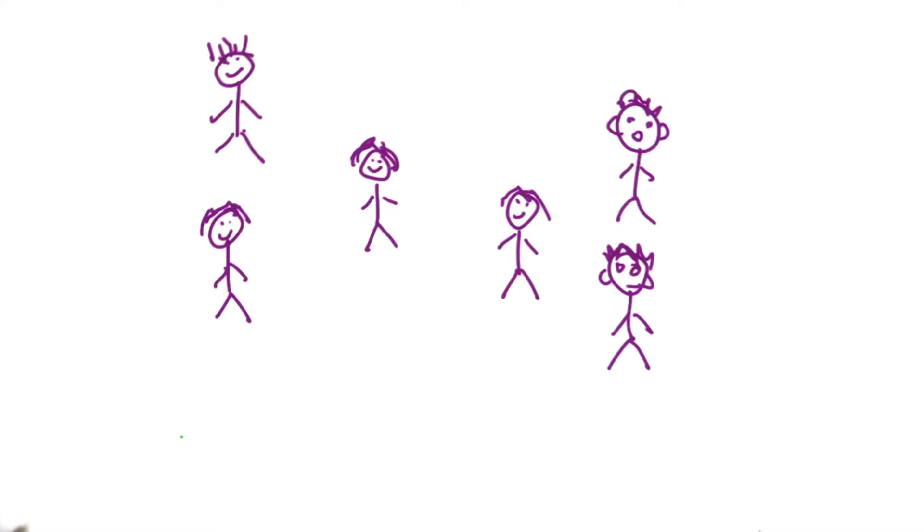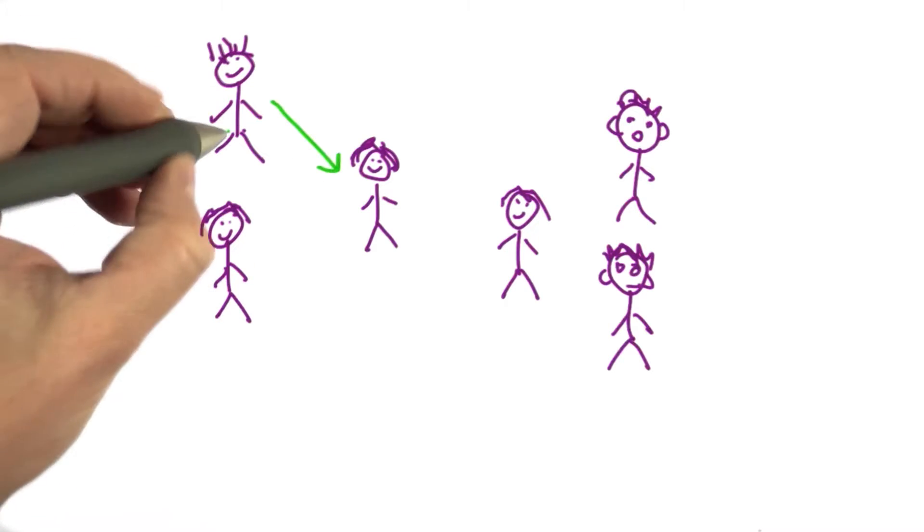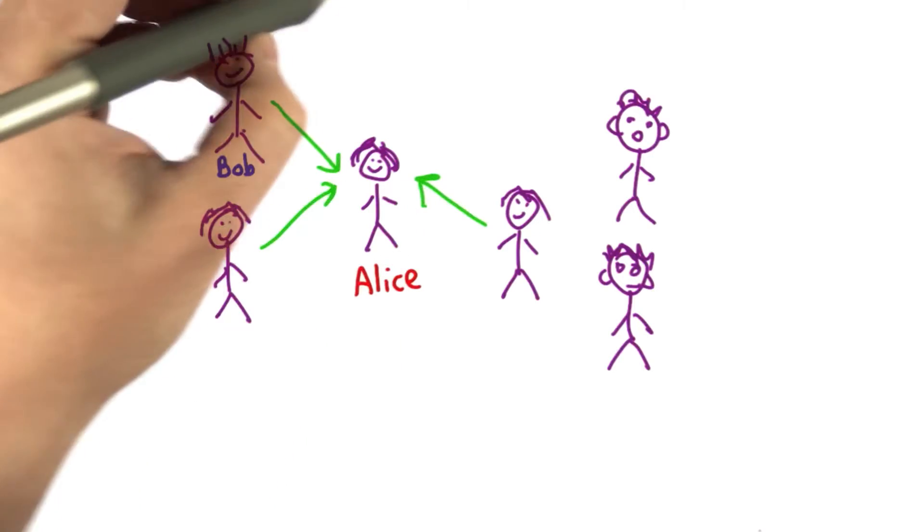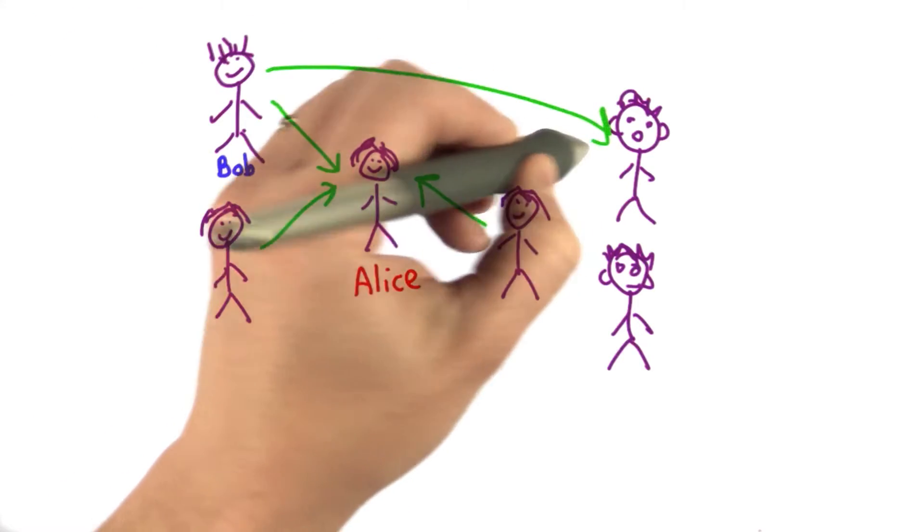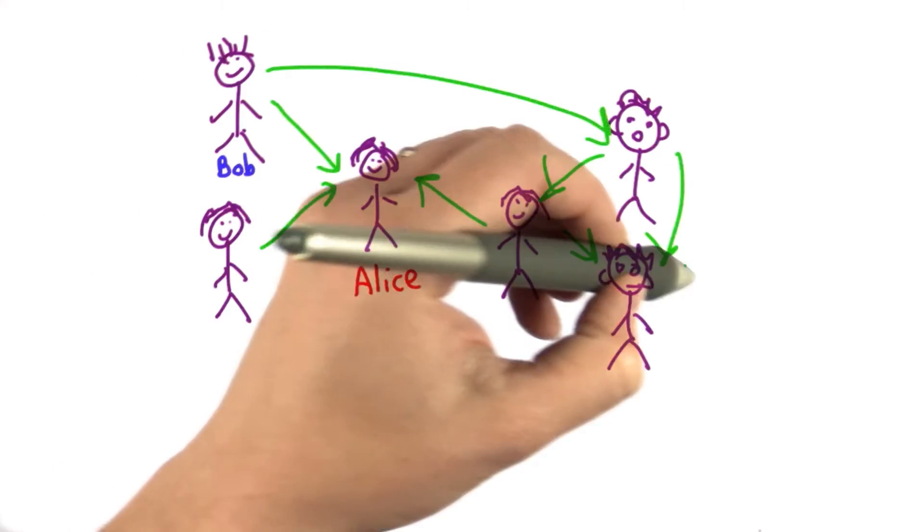Just because Alice is friends with Bob doesn't mean that Bob is friends with Alice. So we'll draw our links as arrows. So this means this person, we'll call him Bob, is friends with Alice. And let's say Alice has many friends. And let's say Bob is also friends with this person. They're friends with each other. We have lots of friendship links.